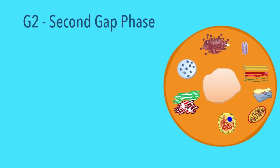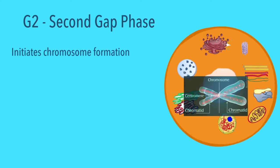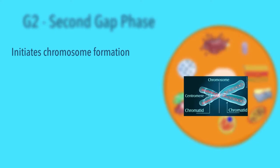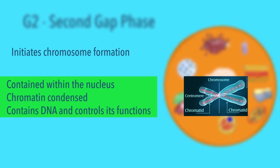The G2 phase, also known as the second gap phase, initiates the starting of chromosome formation. Wait, what's a chromosome? A chromosome is contained within the nucleus. Its chromatin is condensed as it contains hereditary information such as the tallness of your body, your hair color, your eye color, and much more. It contains DNA and controls its functions.